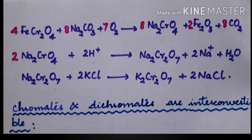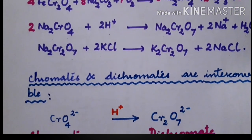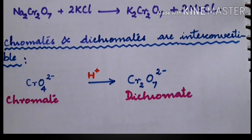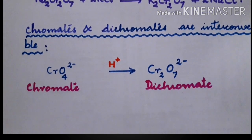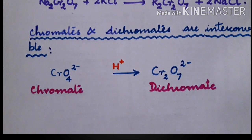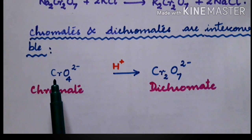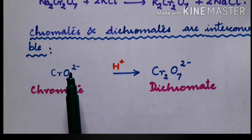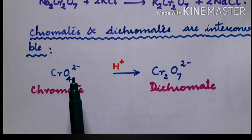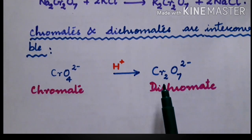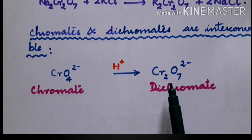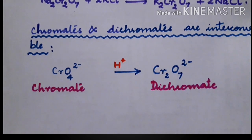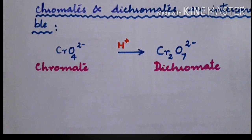Now coming to the main reaction of chromates and dichromates. We find that chromates and dichromates are interconvertible. Chromate ions with the formula CrO4 2- on acidification will be converted to dichromates. We will see how to balance the equation.